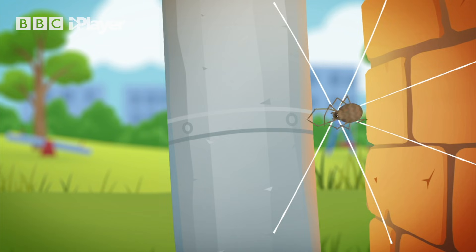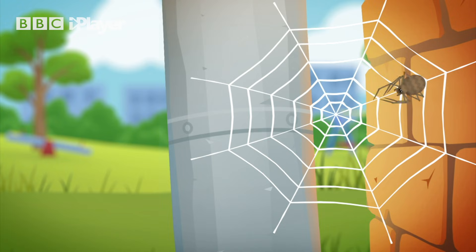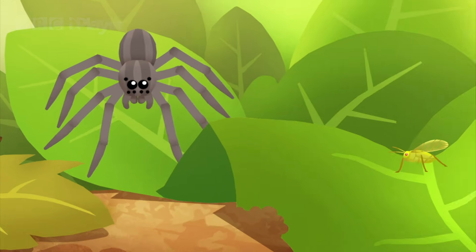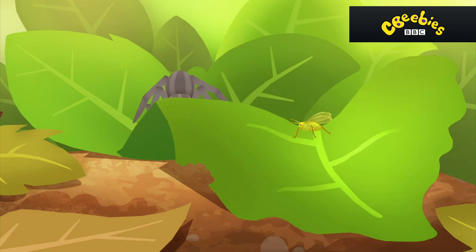Spiders are expert hunters and predators which means they hunt and eat small insects. Some spiders can spin amazing webs to catch flies while others hunt for insects using their speed.